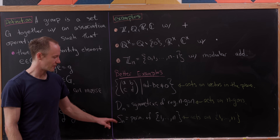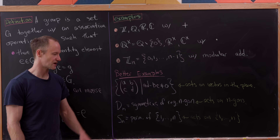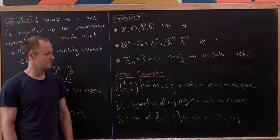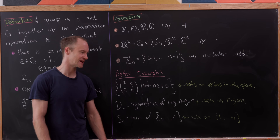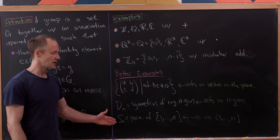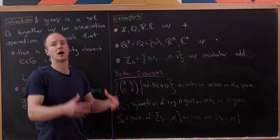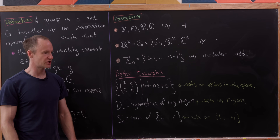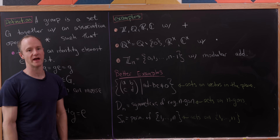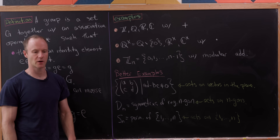Then there's D_N, the dihedral group, which is symmetries of a regular N-gon. It naturally acts on a regular N-gon by performing reflections and rotations. And we have the symmetric group S_N, which is all permutations of the set from one to N — it obviously acts on the set one to N. All these groups are made up of things that act on other things.